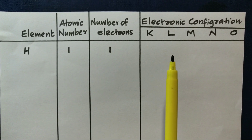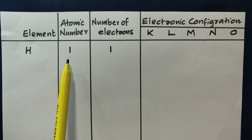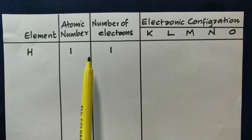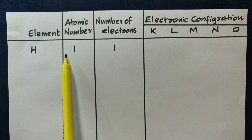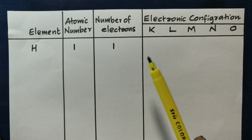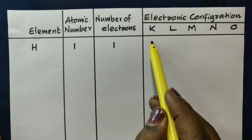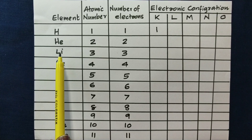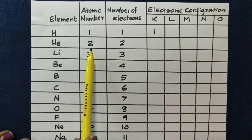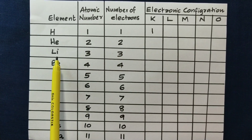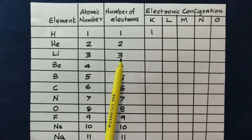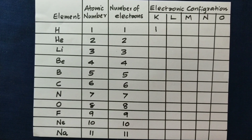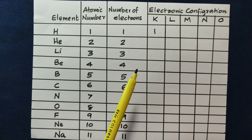Hydrogen has atomic number 1. Helium has atomic number 2. Lithium has atomic number 3 with 3 electrons. Beryllium has atomic number 4 with 4 electrons. Let's take a look at the electronic configuration of each element.